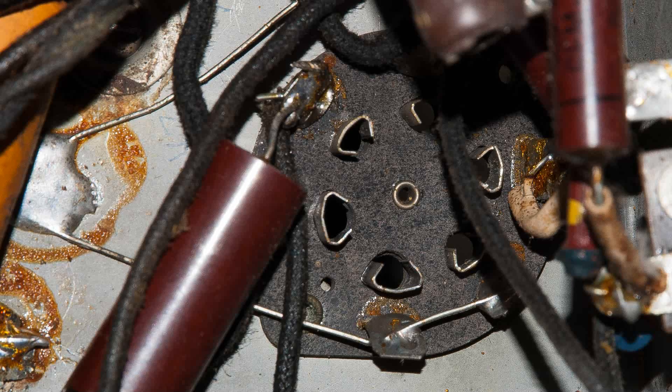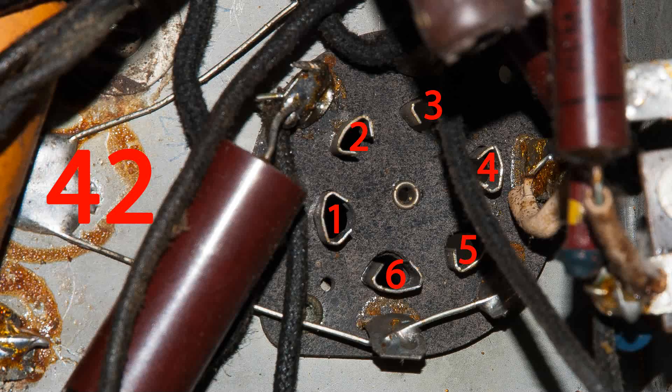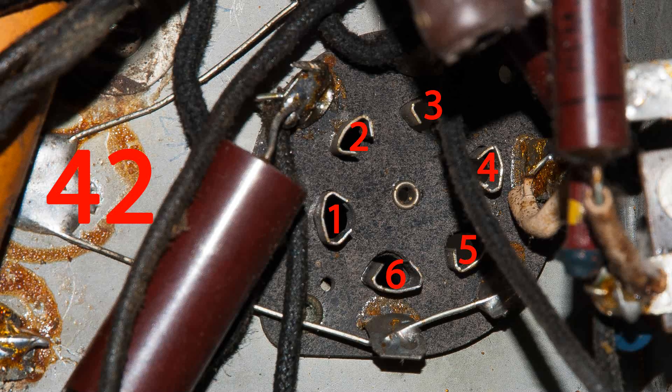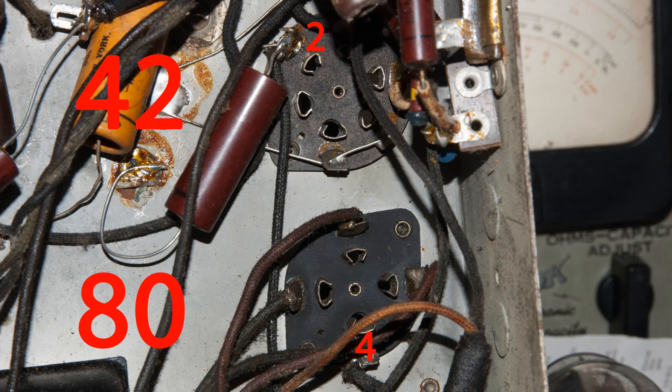Here is the 42 tube socket, and this is how the pins count. You can see pins one and six are the larger pins. Here is the 80 and the 42. I'm going to be using pin 4 of the 80, although it'll show as one in the wiring diagram, and pin 2 of the 42 to do the next test.